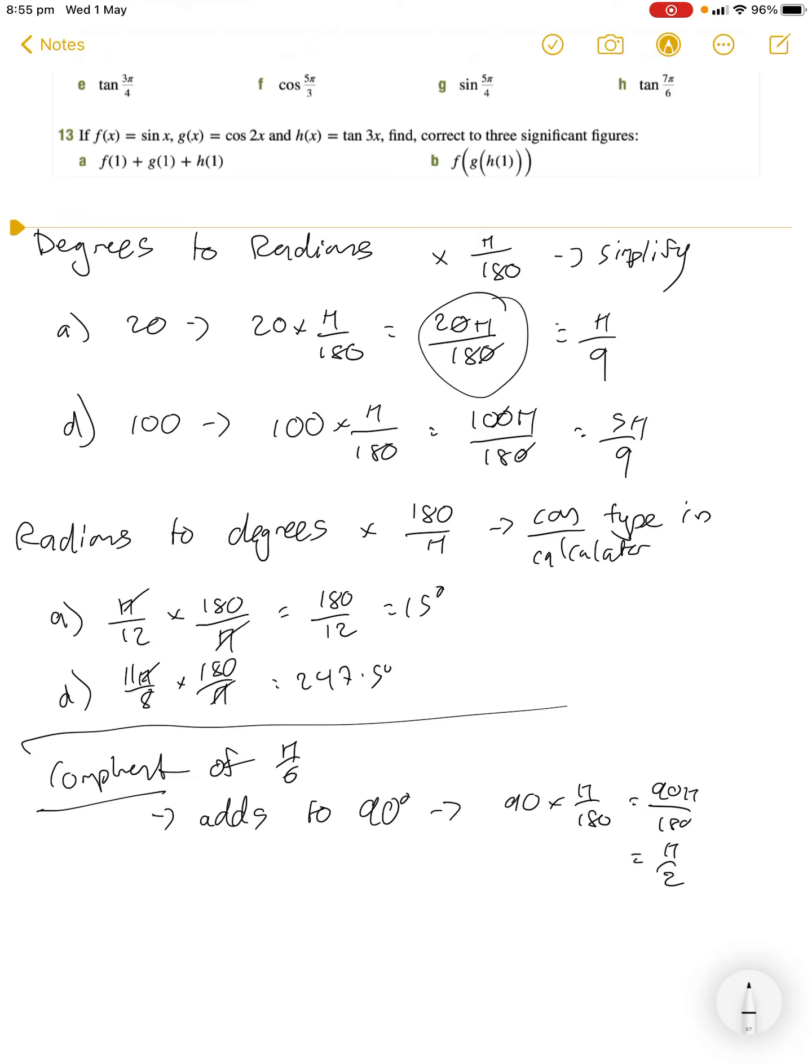So we can work this in terms of radians. We can do π over 2 minus π over 6, which is going to give me my answer of what the complement is. If we do 3π over 6 minus π over 6.